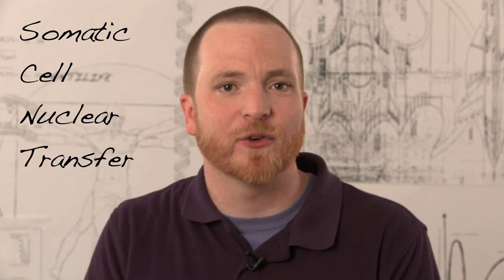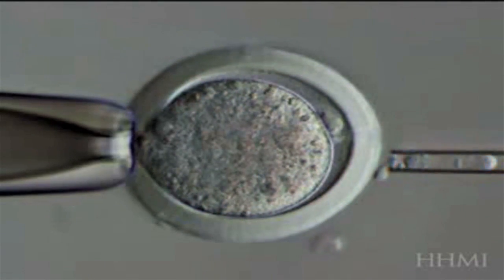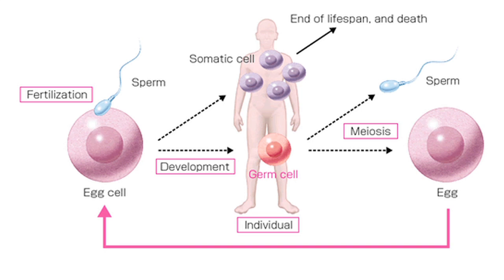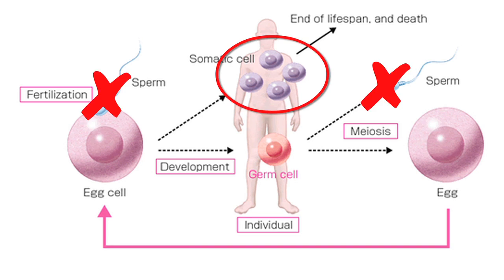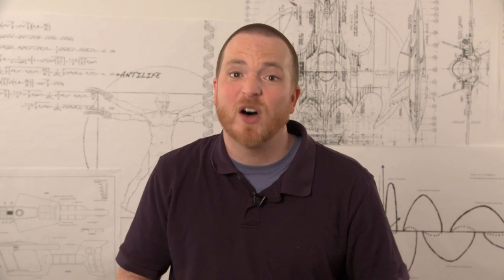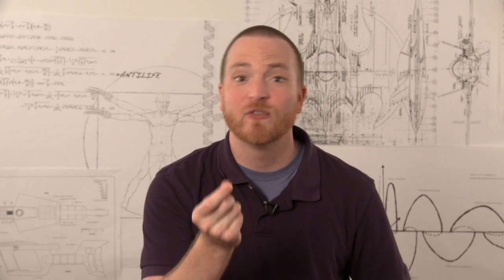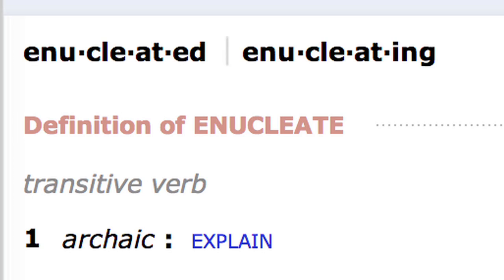In somatic cell nuclear transfer, an egg is taken from a female, and then the nucleus is removed from the egg. Then a somatic cell is taken from the individual you want to clone. A somatic cell is any cell that's not a sperm or an egg. It can be a skin cell, a blood cell, or even hair. Fortunately, I have plenty of these.